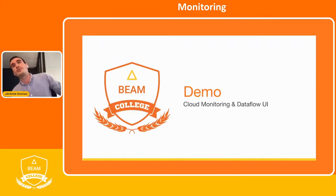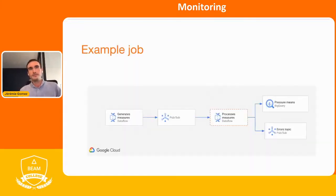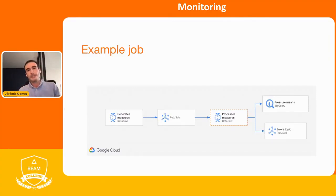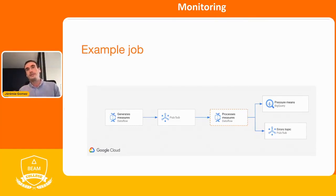Now I'll show you both Cloud Monitoring and the Dataflow UI. For this, I've created two Dataflow jobs. One on the left generates some measures — imagine a factory with robots creating cars, sending messages about the pressure of the machines — writing to PubSub. Then I have another job that processes these measures: if measures are good, it writes to PubSub; if they're bad, it writes the averages of the pressure into BigQuery.